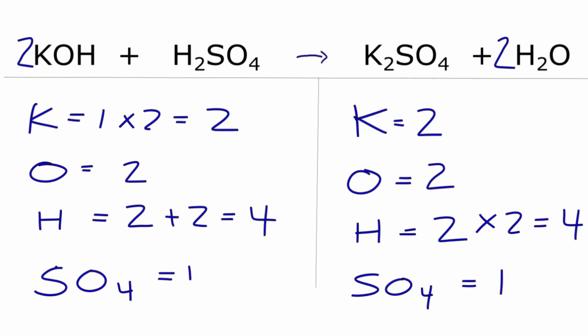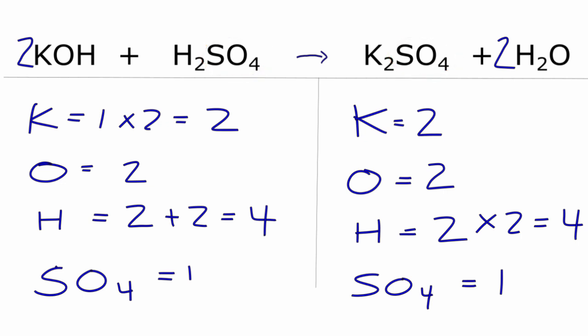The oxygens are balanced, and actually everything's balanced. Two potassiums, two oxygens, four hydrogens, and that sulfate — I have one sulfate here and one sulfate here. This equation is balanced. You can think about these polyatomic ions, like SO4, as one thing if you have them on both sides of the equation — in that case, it makes the balancing a lot easier. So that's the balanced equation for potassium hydroxide plus sulfuric acid yields potassium sulfate and water.